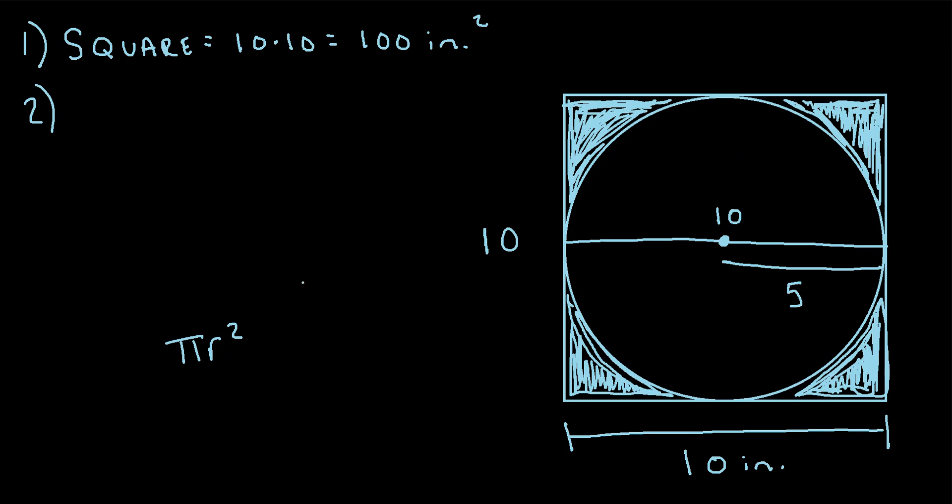We can plug that in for r right here. The area of the circle is simply equal to pi times 5 squared. 5 squared is 25, so we can write this as 25 pi inches squared.